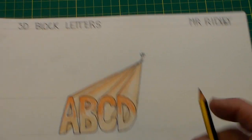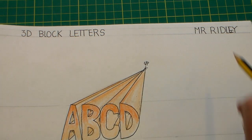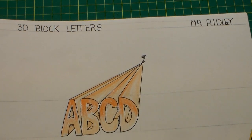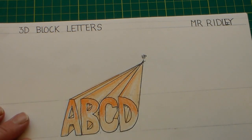What we're going to do first of all is do a title which is 3D block letters and add your name to the sheet. If you're not sure about that, there's another video you can watch which shows you that.